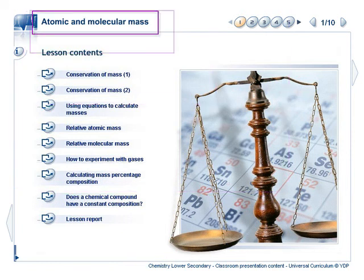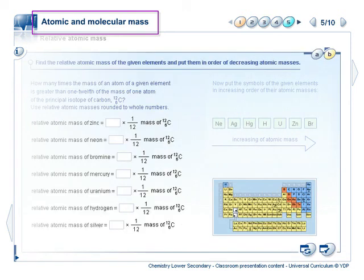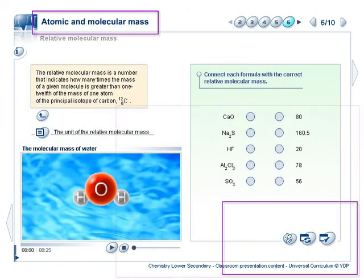The atomic and molecular mass lesson is one of the chemistry lessons available at the lower secondary level, designed for 13 to 16 year old students. Its general structure and functionality are similar to those of other subjects in the Universal Curriculum.